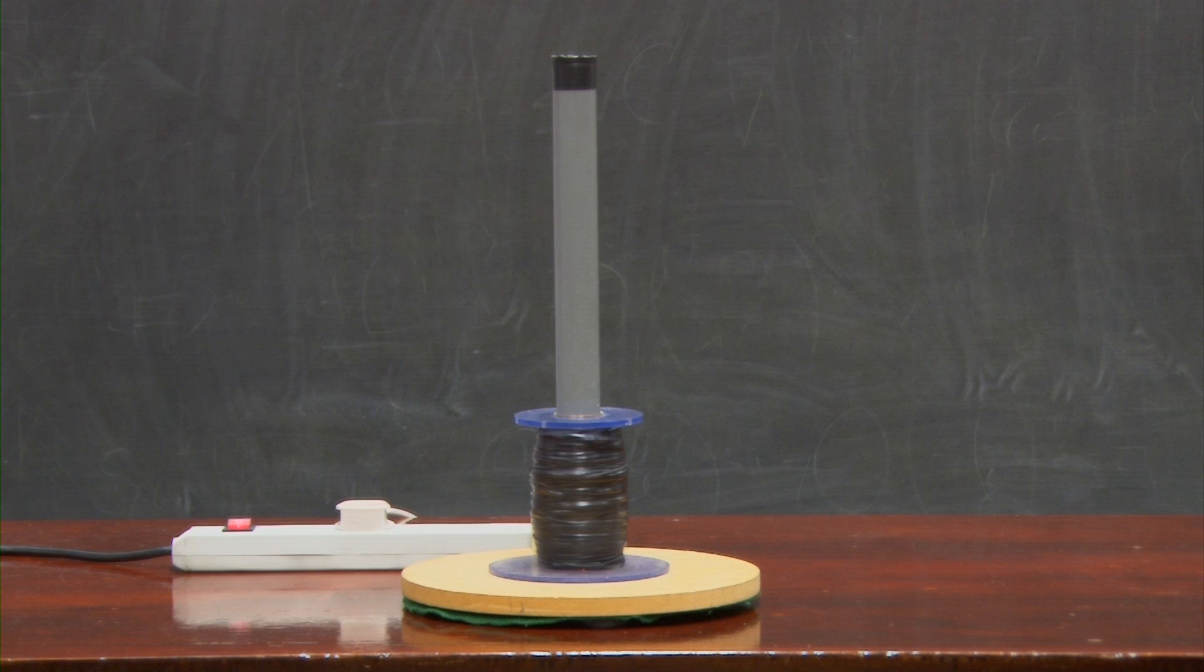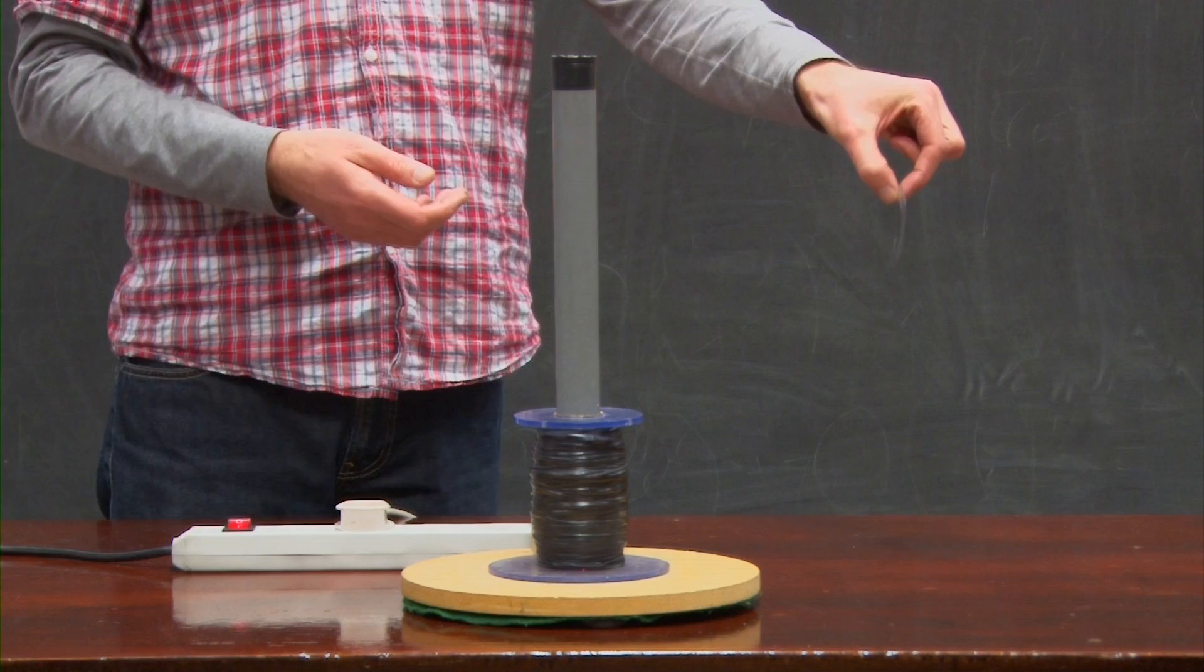And if not, how do you explain the levitation? And if you want something else to think about, watch this final demonstration, and see if you can explain the behaviour of the thin aluminium foil ring.